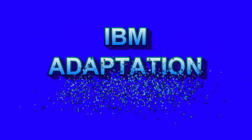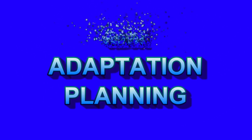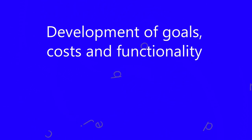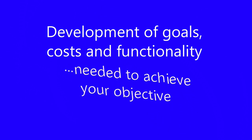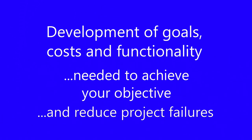First, how is process planning used in IBM? What is IBM adaptation process planning? You can research plenty of different process planning models from the Internet, but I'm going to simplify it for use in planning for your IBM adaptations by using an example of a couple of adaptations of my own, showing both a small failure and a big success. Process planning, in general, is a development of goals, costs, and functionality required to achieve the needed objectives and can hopefully reduce the number of adaptation failures.